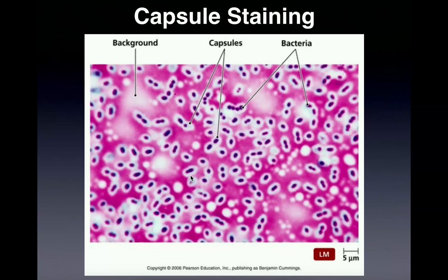You are not required in our class to know any specific genera that actually produce capsules. But I will mention that the species we looked at under the microscope was Enterobacter cloacae. So hopefully this gave you a good understanding of the capsule stain, at least what I required you to know for our lab.